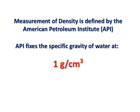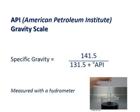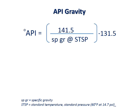According to the API gravity scale, specific gravity equals 141.5 divided by 131.5 plus degrees API. Specific gravity can be measured with a hydrometer. API gravity is equal to 141.5 divided by specific gravity at standard temperature and standard pressure, minus 131.5.